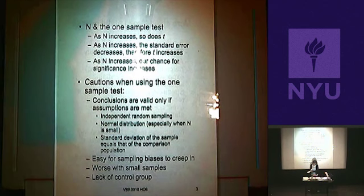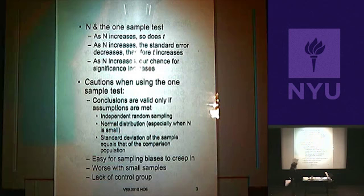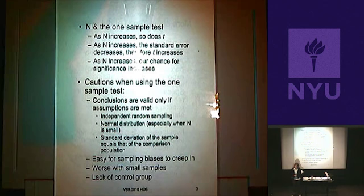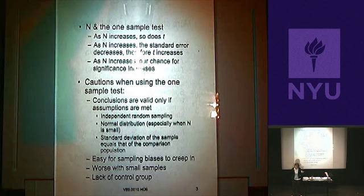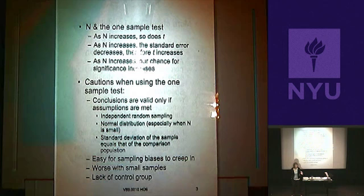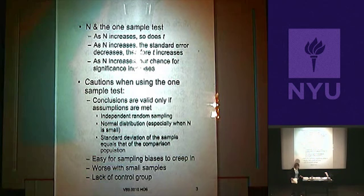Sample size has a double effect in the T test. As N goes up, the standard error decreases, T increases, and the probability decreases — increasing the chance of rejection. But N also appears in the degrees of freedom: as N gets bigger, degrees of freedom increase and T critical values get smaller. So N makes your T observed bigger and your critical value smaller at the same time.